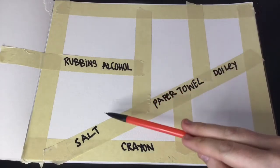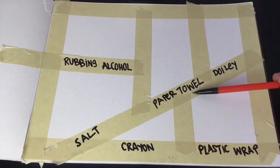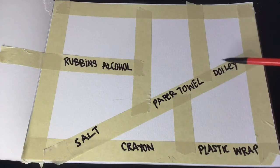You're going to be using rubbing alcohol, salt, a crayon, paper towel, a doily, which is a weird napkin usually used by grandmas, and plastic wrap. If you are an online student, all of these will be mandatory except for the doily, which I understand is a little tough to find. However, they do sell them in a pack of 32 at Dollar Tree if you want to go hunting for them.